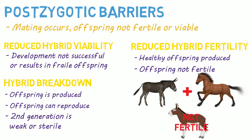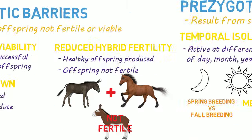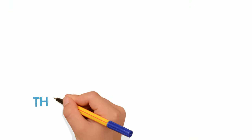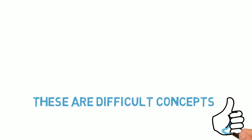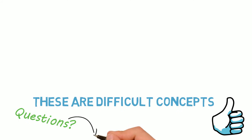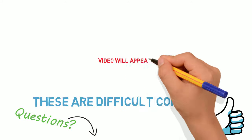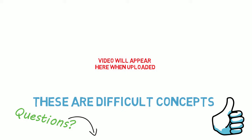Speciation, as we've talked about with respect to reproductive barriers, is a complicated topic, which I've done my best to simplify. If this video helped you, give it a like, and if you have more questions, please throw them in the comments. If you want to learn about allopatric speciation versus sympatric speciation, watch that video. Thanks for watching, and I'll catch you next time.